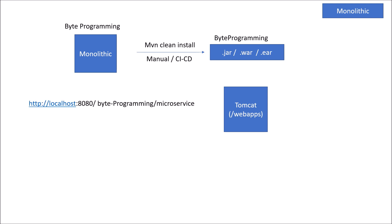Let's assume that we hit a request. While processing of the request, the log is generated and this log is called application logs. On broader terms, there are two types of logs generally in any enterprise project. First is application logs, second is audit logs. The path of application logs is /var/logs/bp.log — bp.log is the file that contains all the volumes of logs generated by the application Byte Programming.